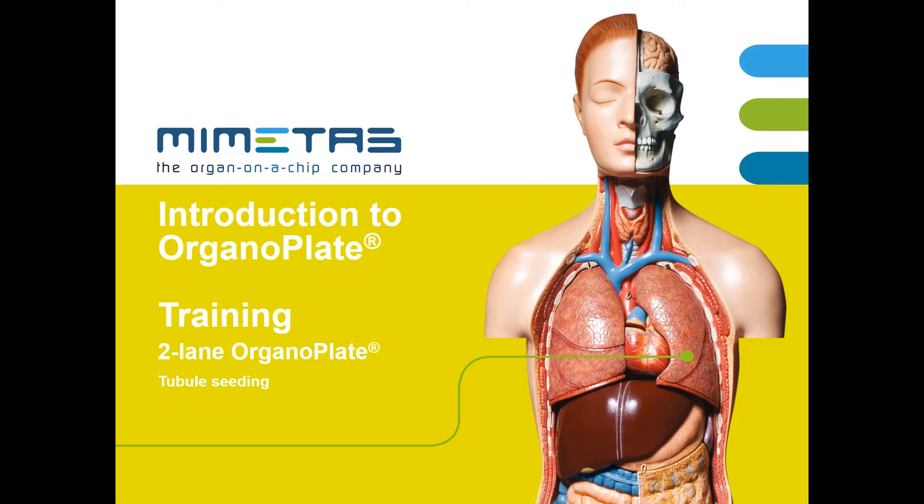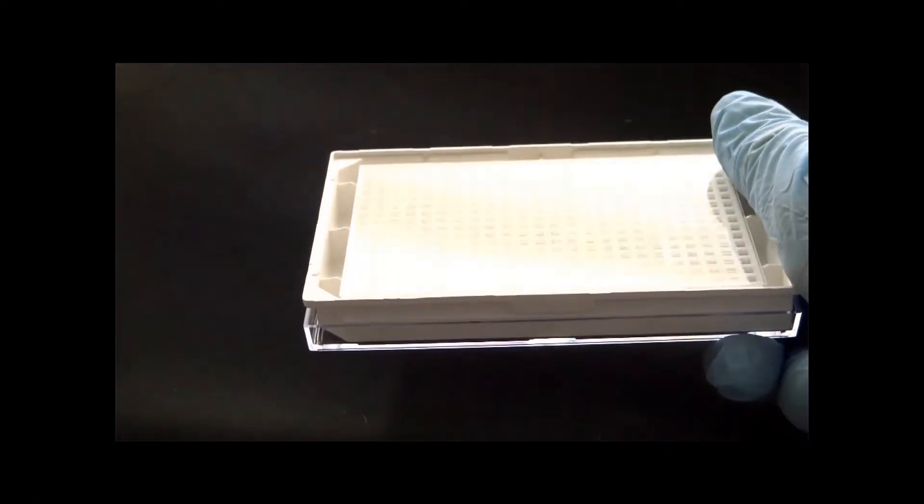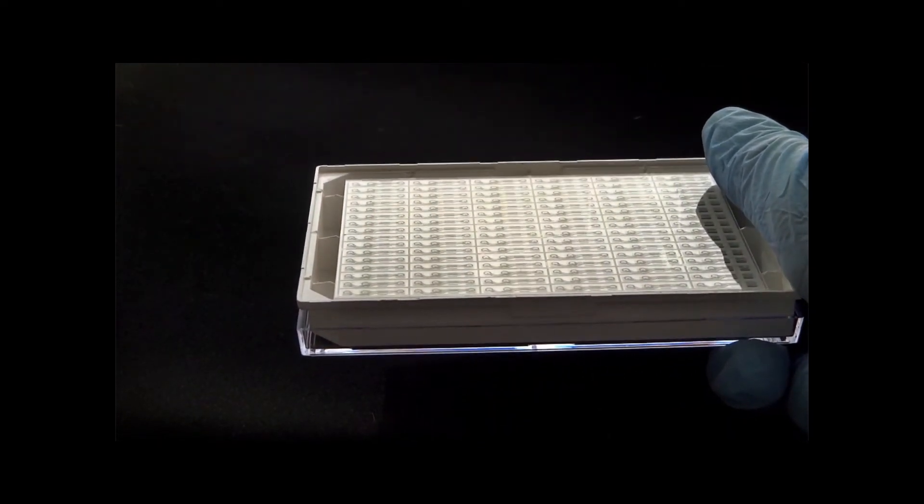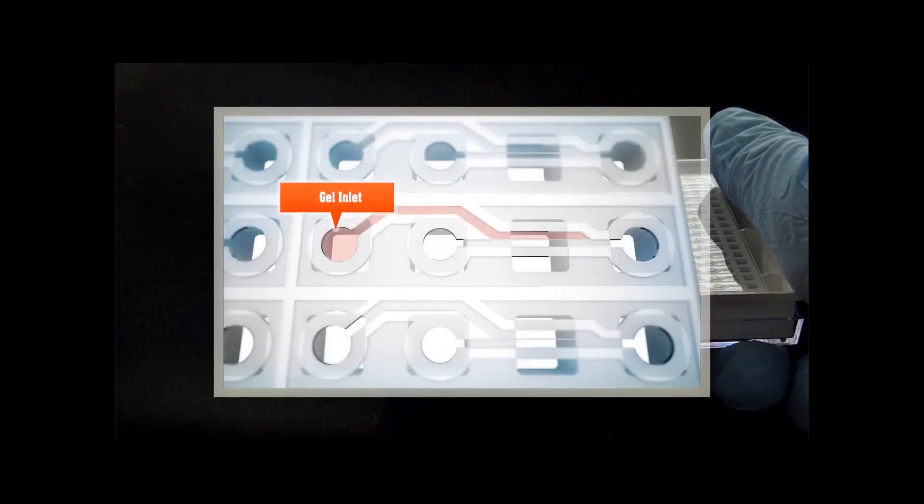Welcome to this training video for seeding of tubules in the Mimetas two-lane organoplate. The Mimetas organoplate contains 96 individual microfluidic networks linking four wells of the microplate together. The network contains a gel channel and a perfusion channel, separated by a phase guide.